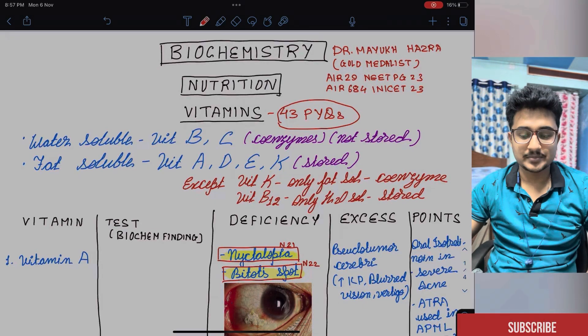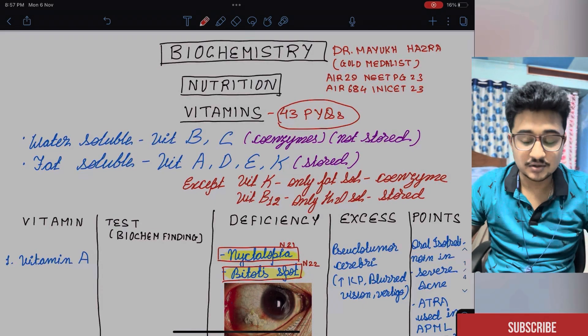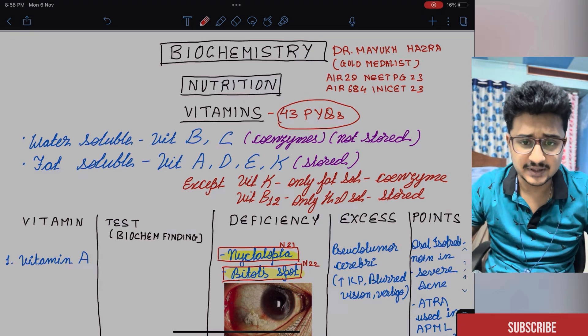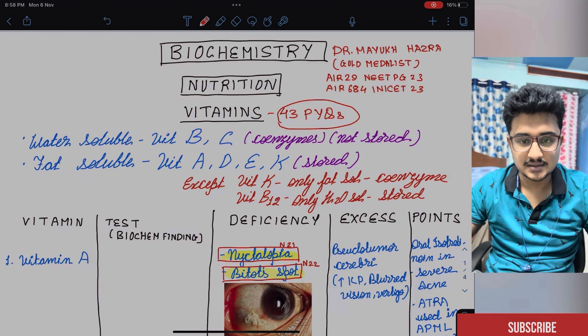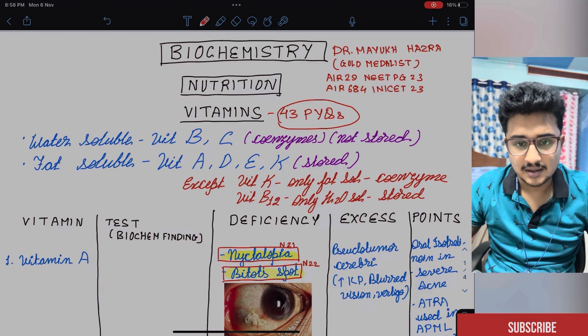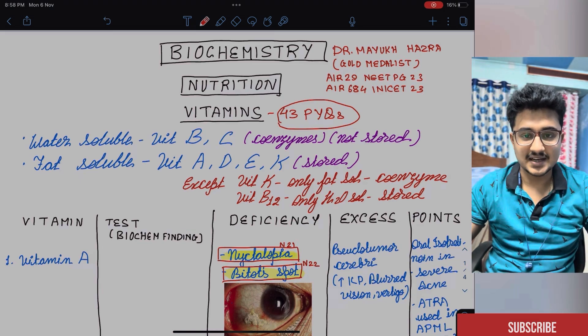So, hello everyone. I am Dr. Mayu Khajra. I secured an AIR of 29 in this year NITPG 2023 and AIR 684 in INICT 2023. Both were my first attempt only.